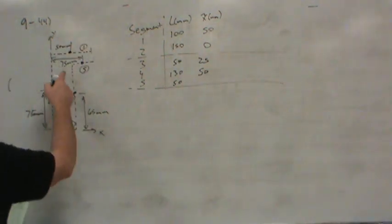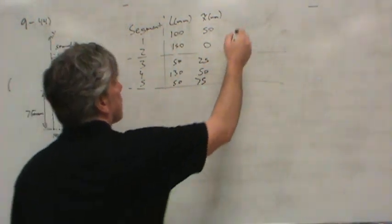And then finally segment five, 75 millimeters, is the centroid location.